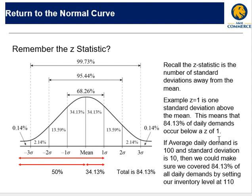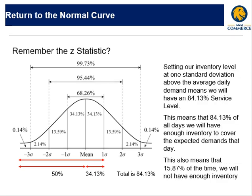So again, if I have a z of one, I would be able to cover 84.13% of my demand. This starts taking us to the area of discussion about setting our lead times.